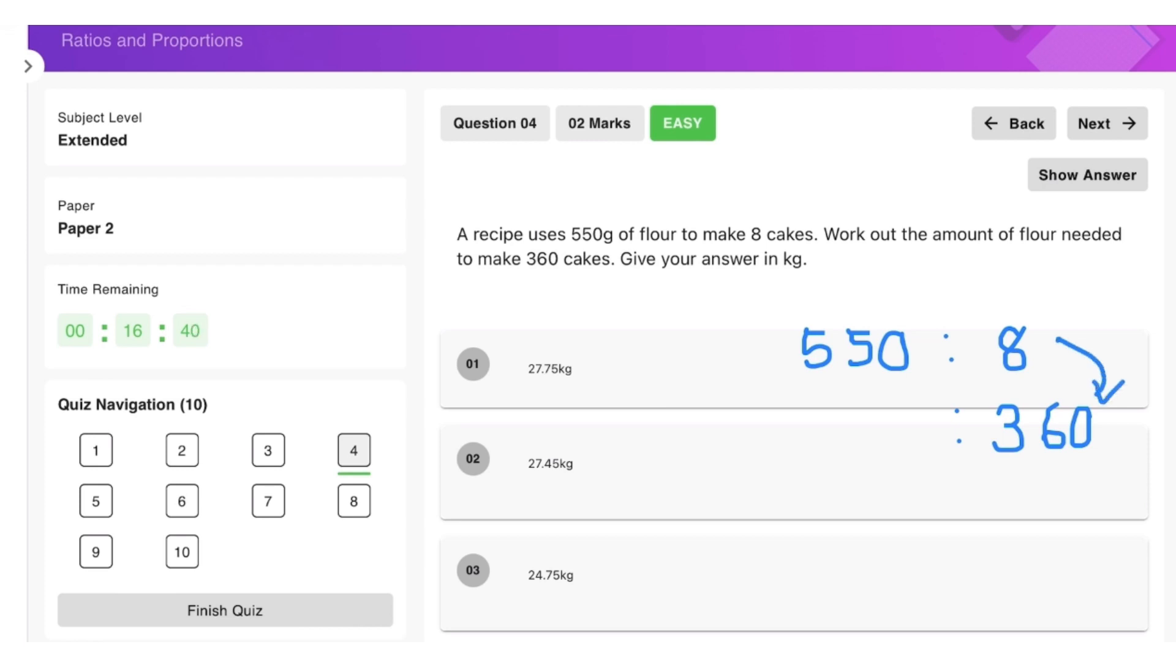So same way, we have to go for 45 times more on this side. So 45 times 550 is basically 24,750 grams, but the answer asks us to give it in kilograms. So that is dividing by thousand, so the answer is going to be 24.75 kg, and that is this one.